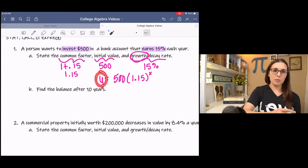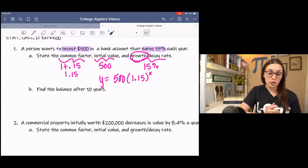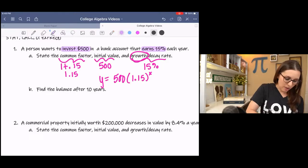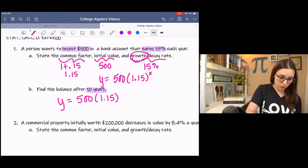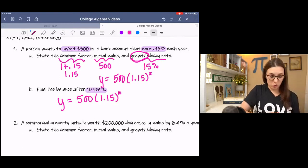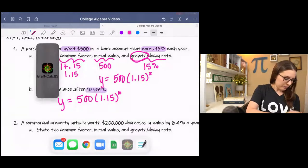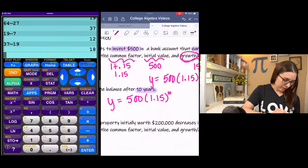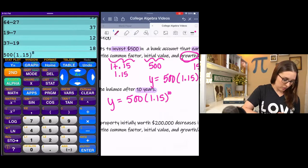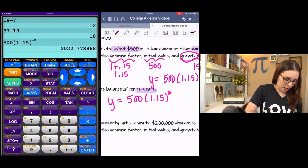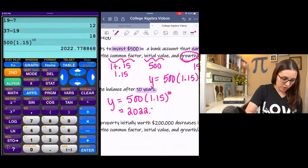And then y is going to be your total amount after x years. So in the next example, when it says find the balance after 10 years, that means that x is 10. You could do this with a table of values by reiterating 15%. Or you can use the equation that you just wrote and type it in your calculator. So we go 500 times 1.15 raised to the 10th.